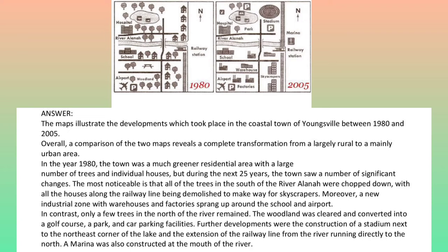The maps show changes that took place in Youngsville in New Zealand over a 25-year period from 1980 to 2005. The maps illustrate the developments which took place in the coastal town of Youngsville between 1980 and 2005. Overall, a comparison of the two maps reveals a complete transformation from a largely rural to a mainly urban area.